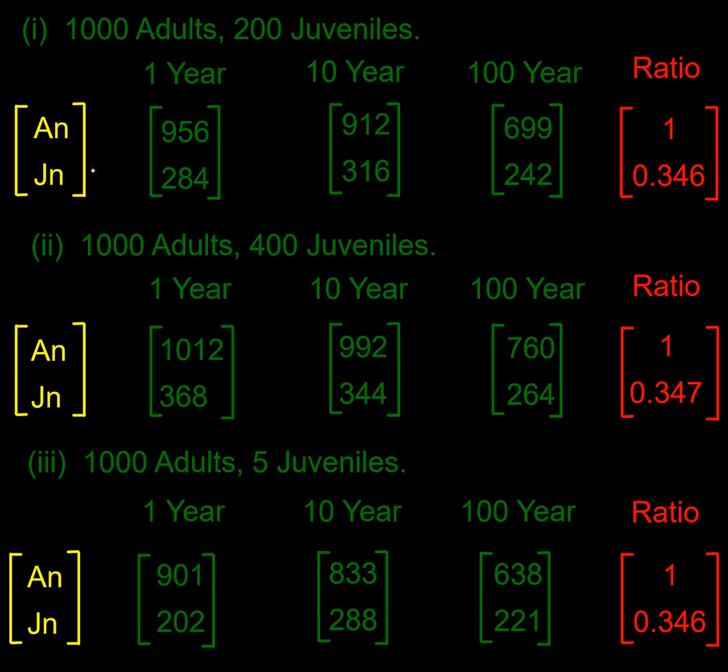If I got my calculator out and I use those populations, for the first one I'm starting with 1000 adults and 200 juveniles. Over the first year the number of juveniles rises a bit, peaks at year 10, and starts to drop away. By year 100, the adult population has gone from 1000 to 900 to 700, so it's going down slowly.